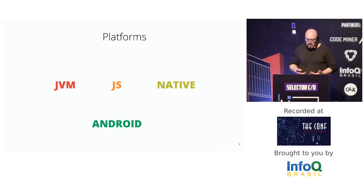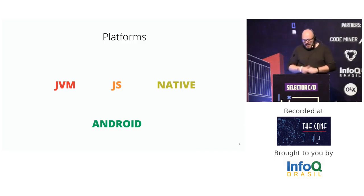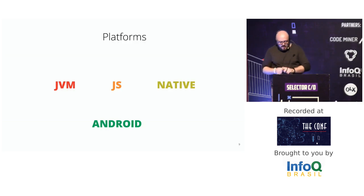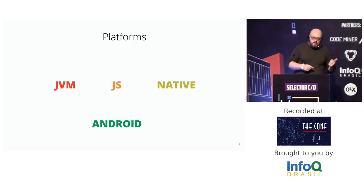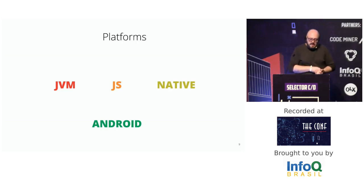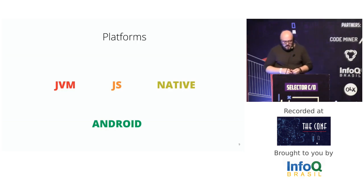When we talk about platforms, the ecosystem of Kotlin applications has grown significantly. Starting with JVM and, as a consequence, Android, Kotlin added JavaScript support introduced in version 1.0 as experimental and then stable in 1.1, and now can run as native code starting in 1.2. Kotlin is an option for each of those platforms.